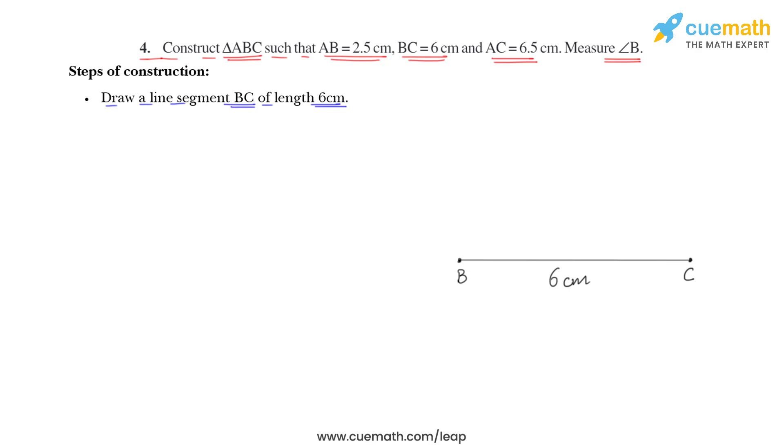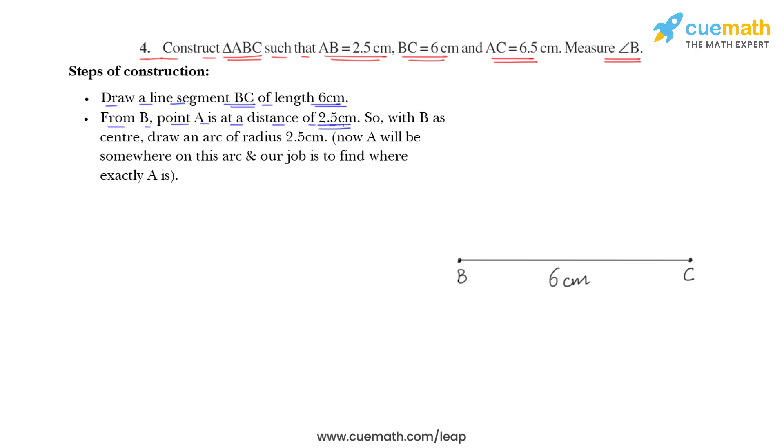From B, point A is at a distance of 2.5 cm. So, with B as center, draw an arc of radius 2.5 cm. From point B, point A is at a distance of 2.5 because AB is 2.5 cm. So, taking B as center and a radius of 2.5 cm, draw an arc. Now, point A will be somewhere on this arc and we have to find that.